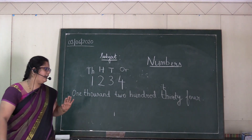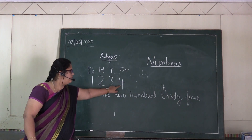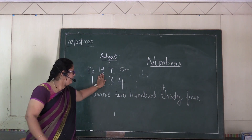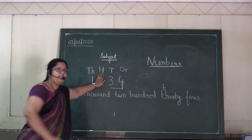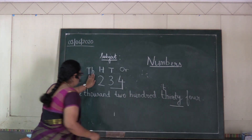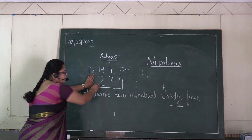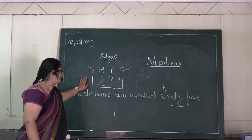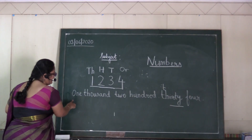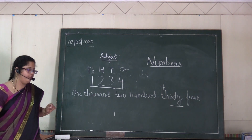If you are getting any confusion, just cover each digit. Which number is this? Four. Then this will be thirty-four. This? Two, three, four — two hundred thirty-four. Now, one. So, one thousand two hundred thirty-four.